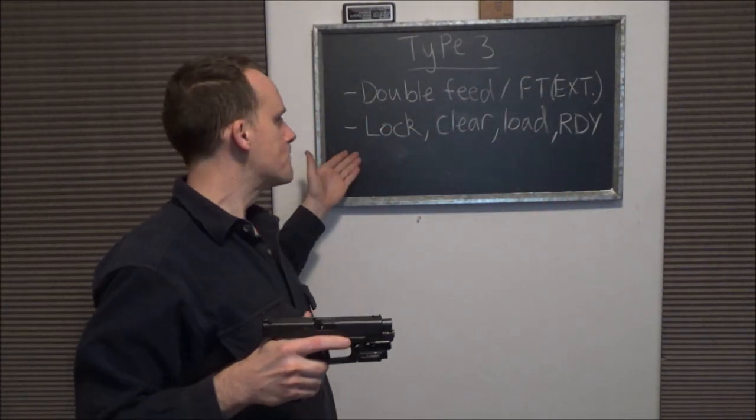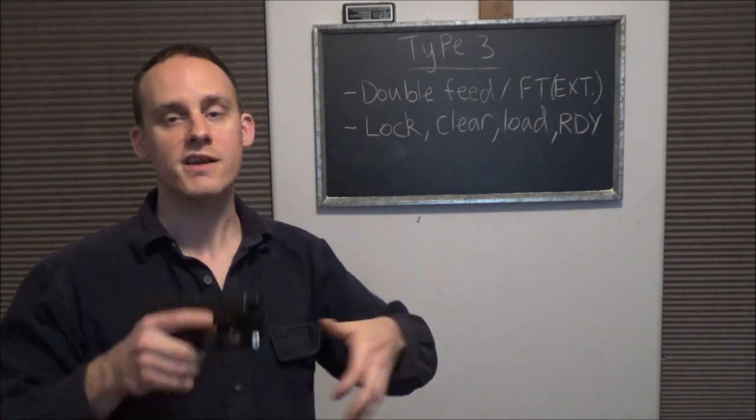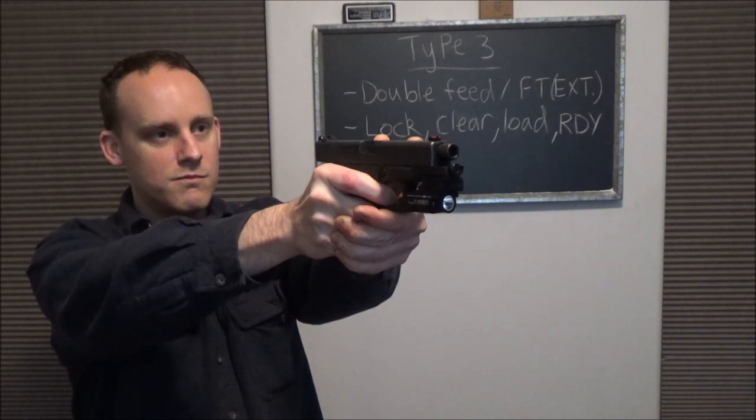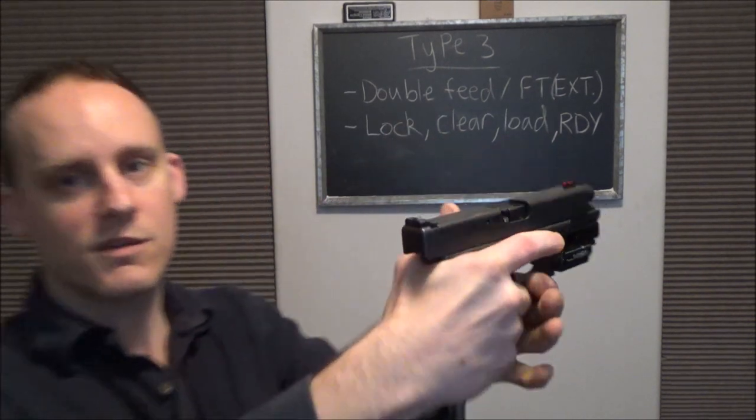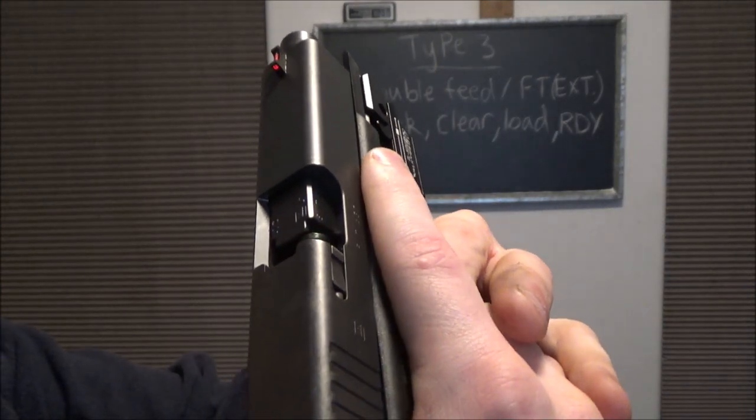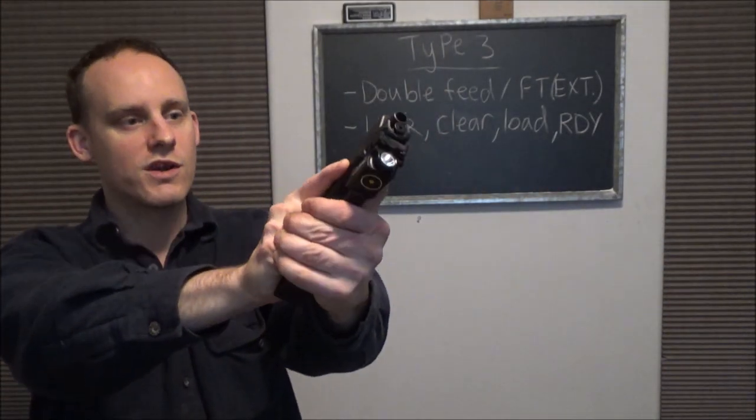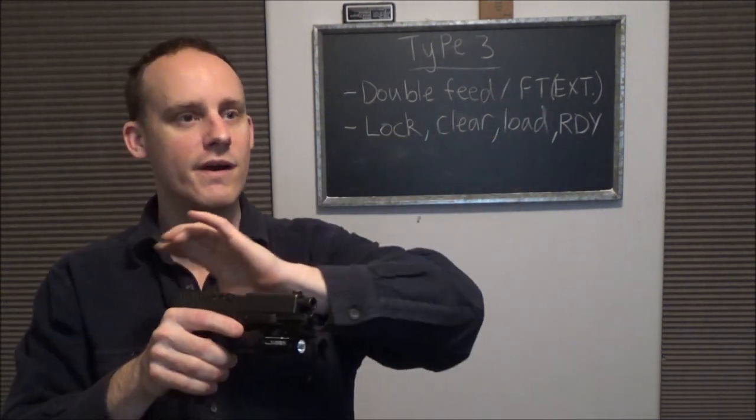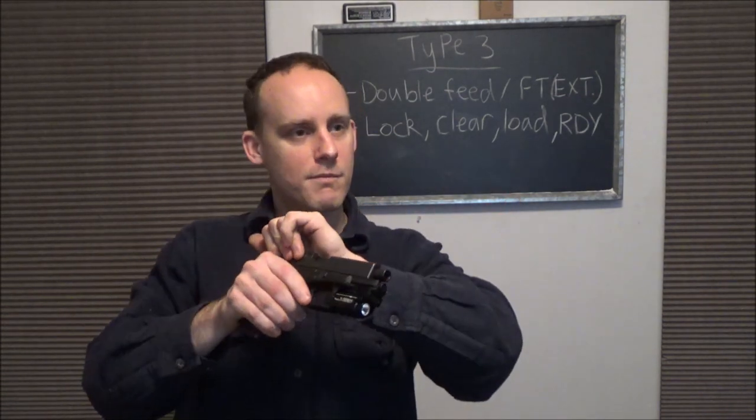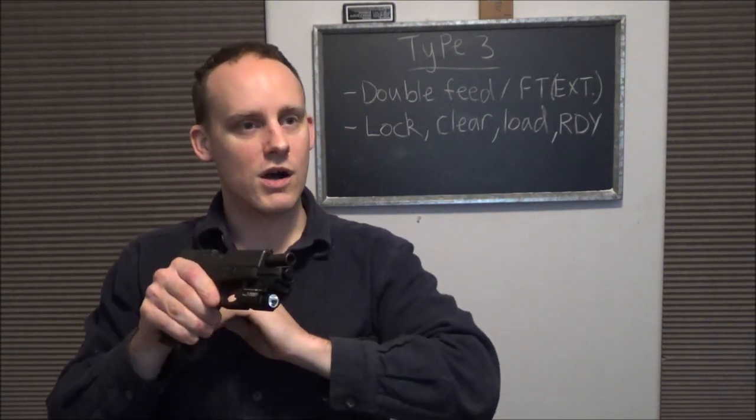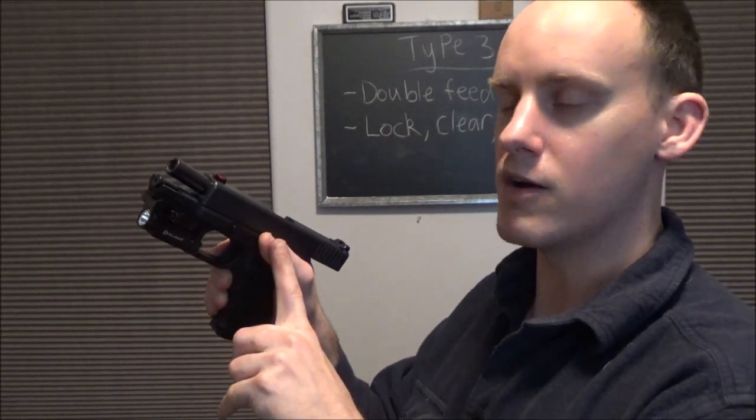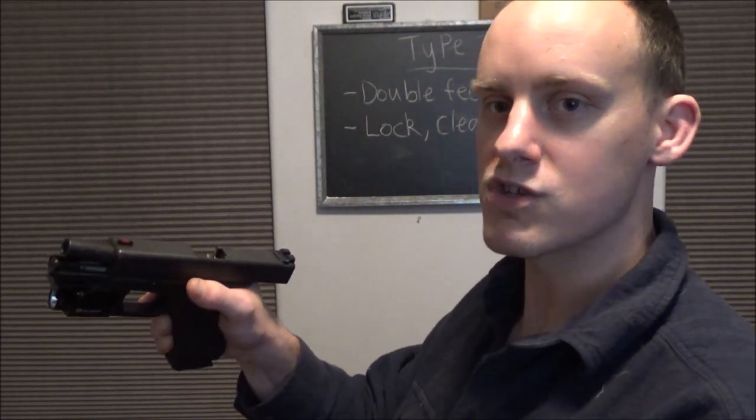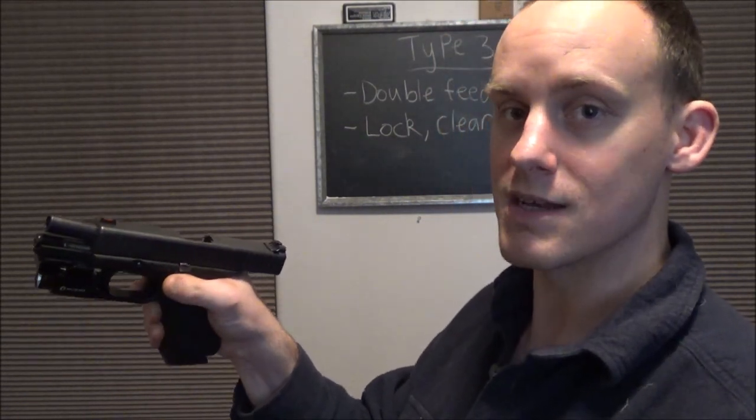So how do we clear this? We lock, we clear, we load, and we're ready. First thing we're going to do is identify the problem. Click and mush, quick identification. So this is what it's going to look like from a shooter perspective, like this. Quick identification, and then we go through our procedures of how to clear. Now I don't have to look at the gun. I can get behind cover. I can check my situation while I lock, and that's going to require just pushing up on the slide stop as I conduct a power stroke. I lock by power stroking while pushing up on the slide stop. That simple.